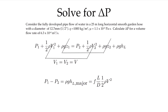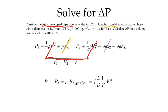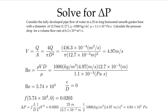We start with our augmented Bernoulli equation where we have our loss term added. Since we have fully developed flow in the pipe, the velocity at 1 and 2 is the same, so we can cancel out the kinetic energy term. Since we have a horizontal pipe, we can cancel out the changes in gravitational potential energy, leaving us with the equation from the previous slide. We'll consider only the major losses, given by the friction factor times the length-to-diameter ratio times one-half rho v squared.